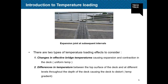Generally, temperature loading is correlated to two parameters. The first is changes in effective bridge temperature, which cause expansion and contraction in the deck — this is called uniform temperature. The second is the difference in temperature between the top surface of the deck and intermediate levels at the depth of the girder, causing the girder to distort — this is considered in the case of temperature gradient.